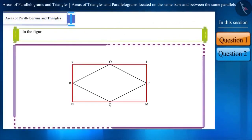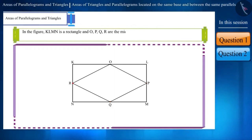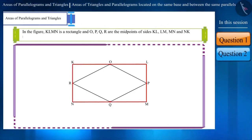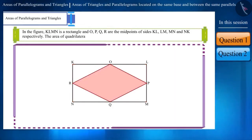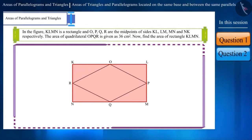In the figure, KLMN is a rectangle and O, P, Q, R are the midpoints of sides KL, LM, MN and NK respectively. The area of quadrilateral OPQR is given as 36 cm². Find the area of rectangle KLMN.